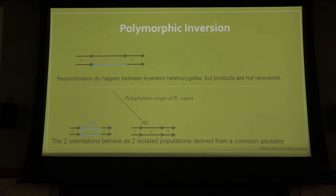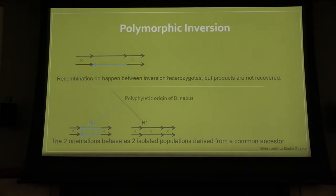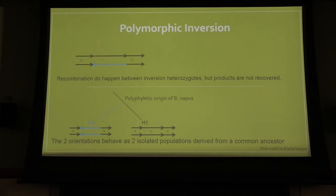Dr. Elodie Gazzave was working on Brassica napus species and found a putative polymorphic inversion. Polymorphic inversion prevents homologous region pairing during meiosis, so recombination between inversion heterozygotes occurs but products are not recovered, which is problematic for breeders and farmers looking for higher-yielding crops. The frequency distribution of chloroplast haplotypes has strongly suggested that Brassica napus has a polyphyletic origin, with initial hybridization events leading to synthesis of Brassica napus multiple times, probably involving different maternal ancestors.